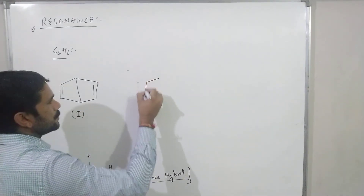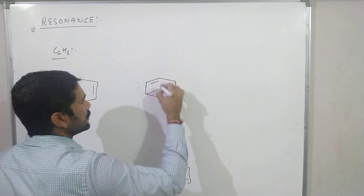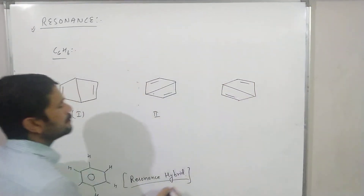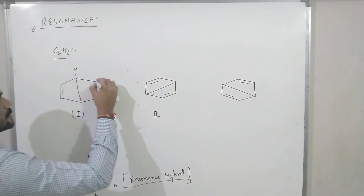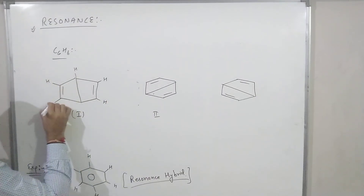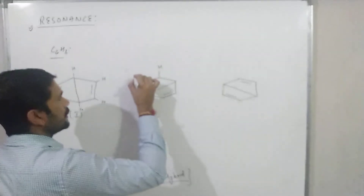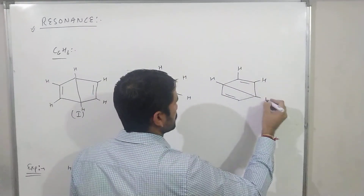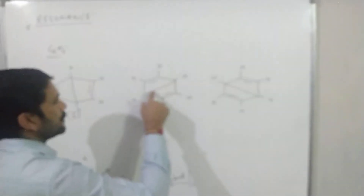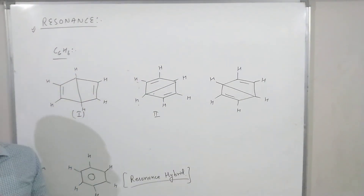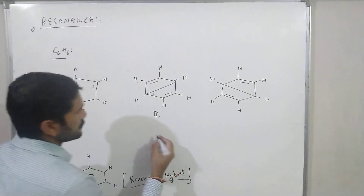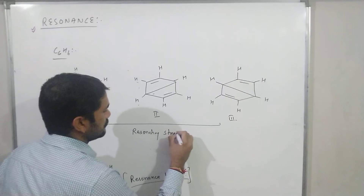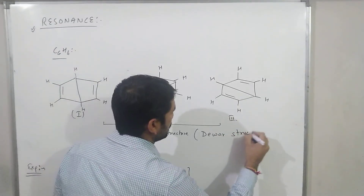The first Kekulé structure has alternating single and double bonds between carbons. The second Kekulé structure has the double bonds shifted to alternate positions. There were also Dewar structures proposed — where carbon-carbon atoms are linked across the ring as additional possibilities. But experimental results differ from all these structures. The Dewar structure is less stable because longer bonds are created. So all these — Kekulé and Dewar structures — are resonating structures of benzene.